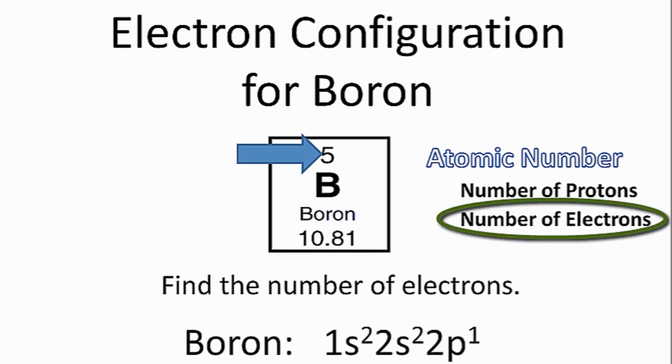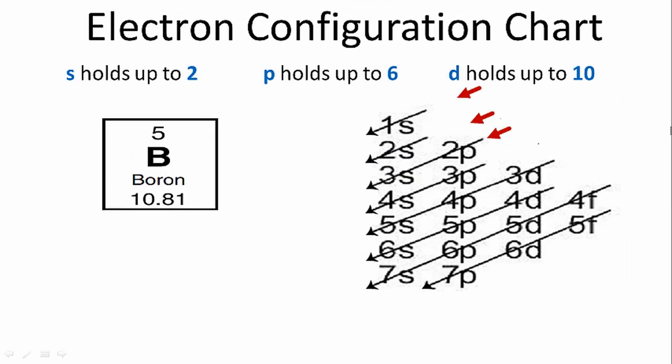We can use that number as we try to find the electron configuration for whatever element we're interested in. So we'll try an example with boron. You can see we have this chart here, and this is the general format you'll see them in. We have boron. We know we have five electrons.